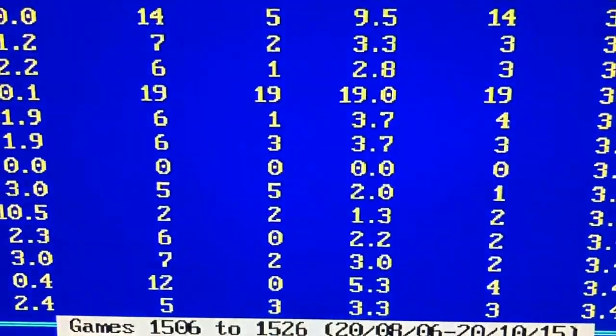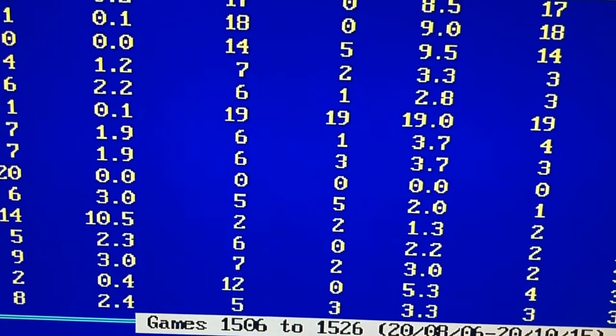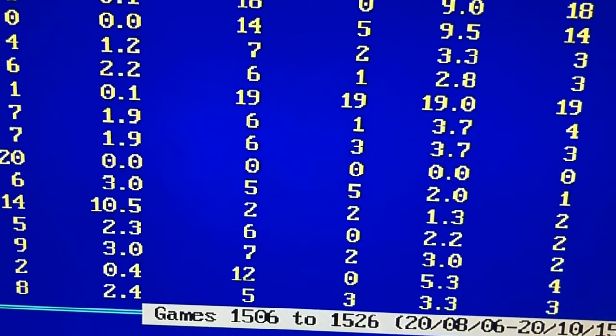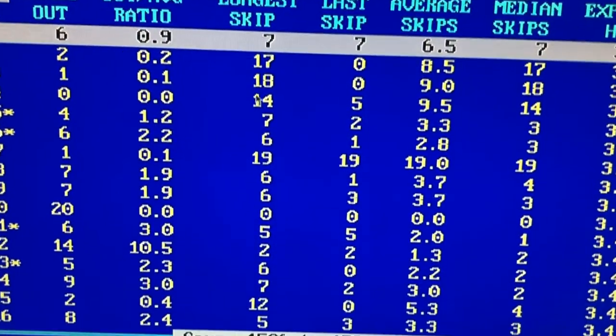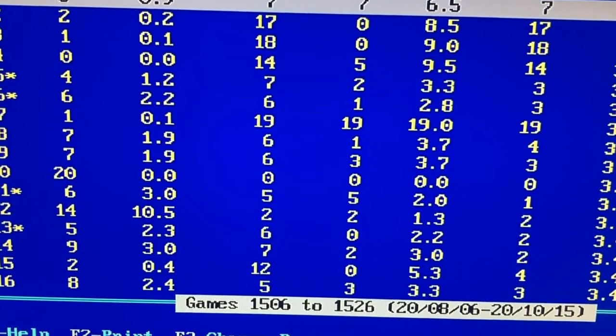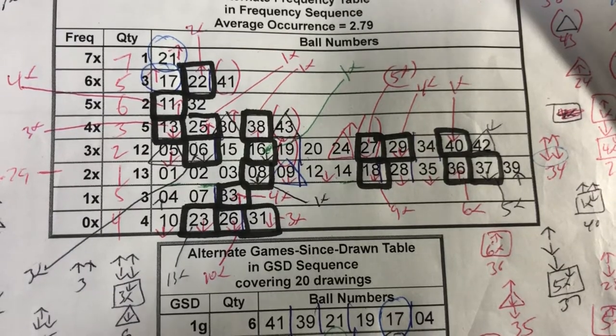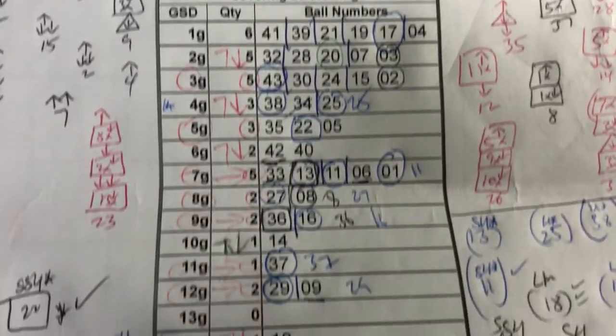Enter it. You should see something like this: 1506 to 1526. 1526 minus 1506 is 20 draws. You want to copy this, F2.